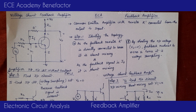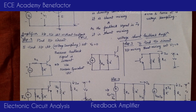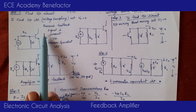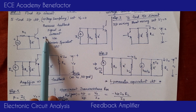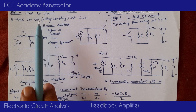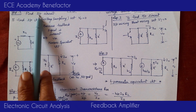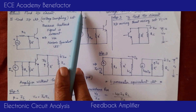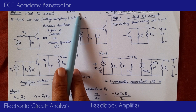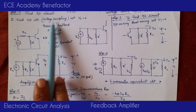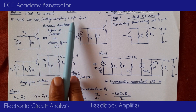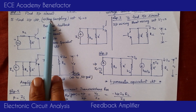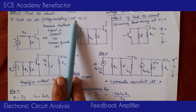Step 2: Draw the amplifier without feedback. To find the input circuit, we need to see what sampling is done at the output side. It is voltage sampling, so we set V0 to zero. To make V0 zero, we open-circuit the output side. This removes the output portion, and R' is then connected back to the input side.